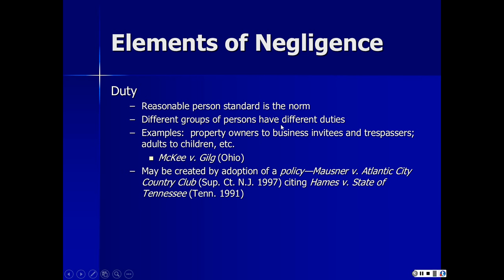Different groups of persons have different duties. For example, property owners owe a duty to business invitees and trespassers. Business invitees are shoppers, students, persons who generally have a quid pro quo with the owner or operator of the premises. Trespassers are persons who are on the premises illegally. And for trespassers, we may have a different duty distinguishing between adults and children.